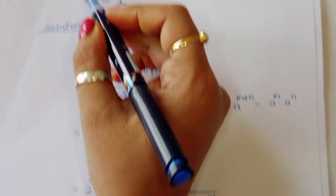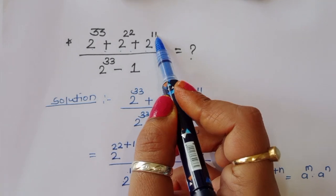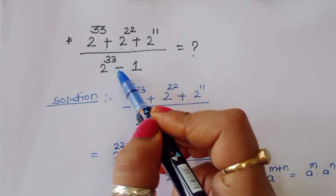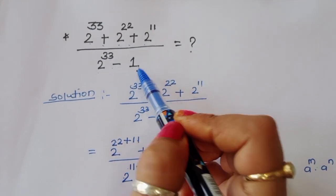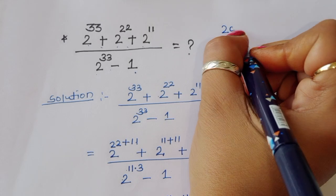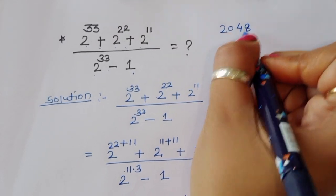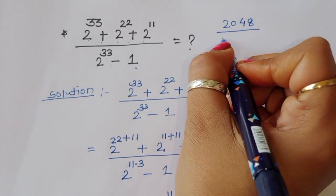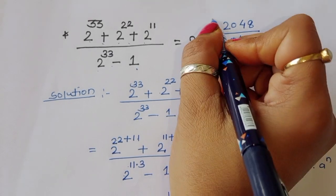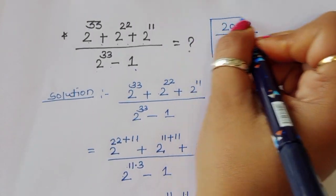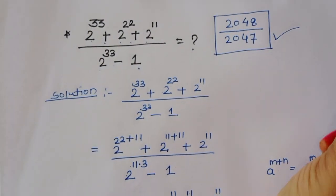So, (2 power 33 + 2 power 22 + 2 power 11) divided by (2 power 33 minus 1) is equal to 2048 divided by 2047. This is the solution. Thank you.